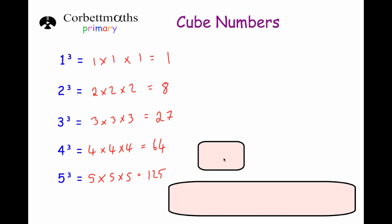Another very useful one to know is what 10 cubed is. So 10 cubed is 10 times 10 times 10. And we work it out. 10 times 10 is 100 times 10 is 1,000. So that's another very useful cube number to know.